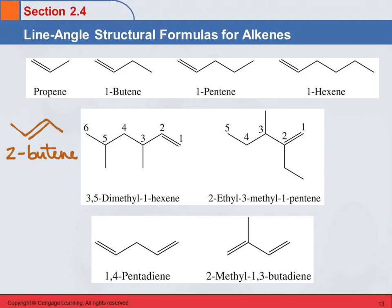Question: do you have to write the number for alkenes, but not for cycloalkenes, because the double bond always starts on one? Yes — the question is, we write a number for the straight chain alkenes but not for the cycloalkenes. For the cycloalkenes, if there's only one double bond, we don't need to write a number because we would always start on carbon-1 with the double bond.